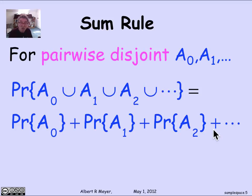That is a rule we'll be using all the time. It's very convenient for computing things. If you break them up into separate cases, then you can handle the separate cases, each A0, A1, separately, and then add up the probabilities.